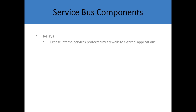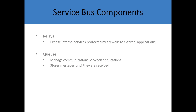When you're setting this up, there are what are called relays, which allow you to configure which services are exposed to external applications through your firewall configurations. Queues manage the communications between any given applications and services — so which ones are able to contact which other applications. For example, is a shipping application able to communicate with an accounting application? It also stores the messages between those applications until they're received by the intended application, so if there's any downtime, the message is still received.